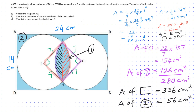The answer to question C is the total of shaded part 1, which is 28 square centimeters, and shaded part 2, which is 56 square centimeters — giving a final answer of 84 square centimeters.